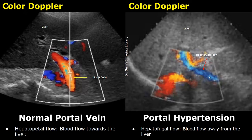This can lead to portal hypertension. In this image there is hepatofugal flow, which means blood is flowing away from the liver. The color is blue, which indicates that the blood is flowing away from the probe. There is also some color mixing due to turbulence.